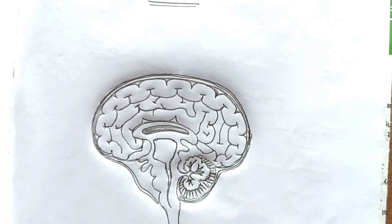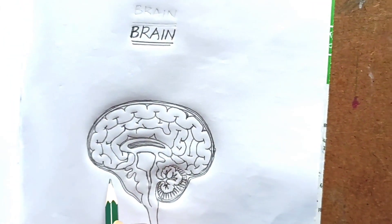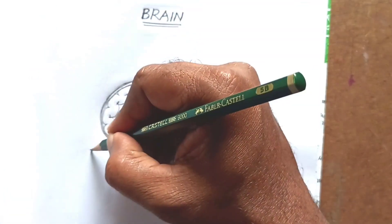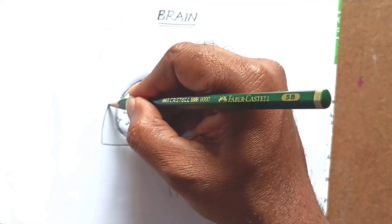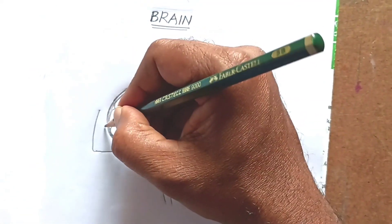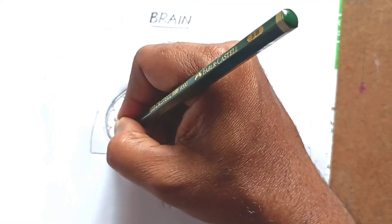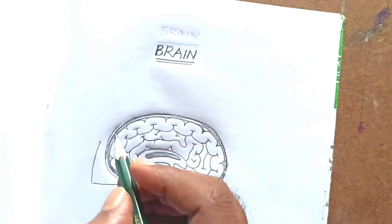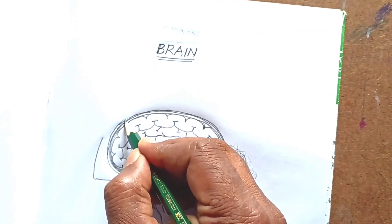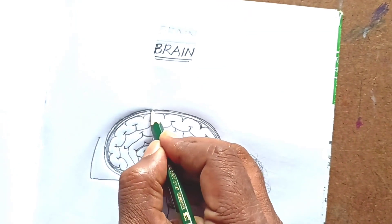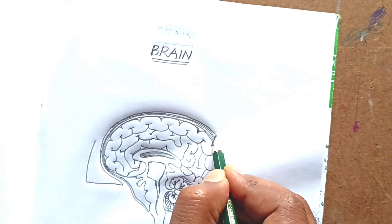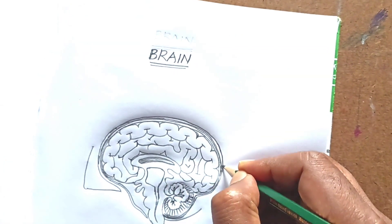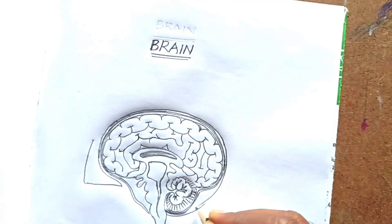You draw like this. Now the outermost region is the skull, also known as the cranium. Now I am drawing the cranium.